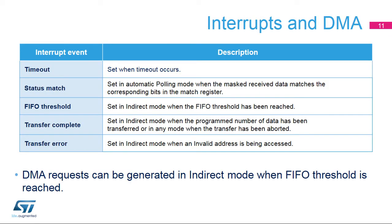The Quad SPI memory interface has five interrupt sources: Timeout; status match, when the masked received data matches the corresponding bits in the match register in automatic polling mode; FIFO threshold; transfer complete; and transfer error. MDMA requests can be generated in indirect mode when the FIFO threshold is reached.